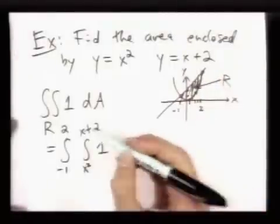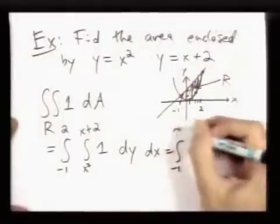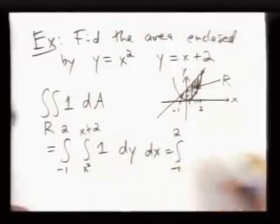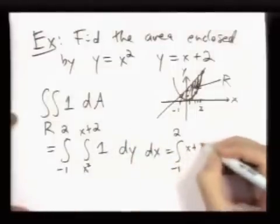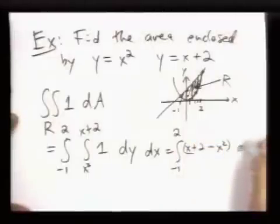And now this is a legitimate iterated integral. Here I'm just integrating 1, so the answer you get will be x plus 2 minus x squared. And then I'm integrating this with respect to x.